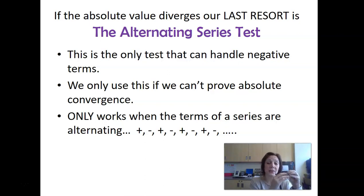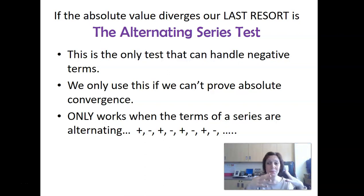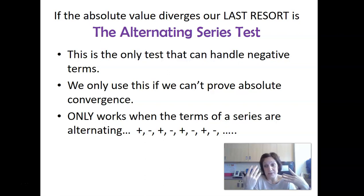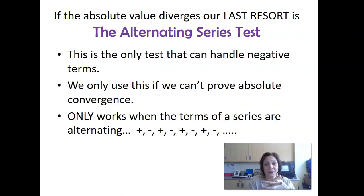If it turns out that the series doesn't converge absolutely, this is a last resort to see if it would at least converge if we kept the negatives — would it converge conditionally? Now, it has a very appropriate name: the alternating series test. By alternating, we mean alternating signs — plus, minus, plus, minus — it doesn't matter the order. But it has to be a true alternating series.